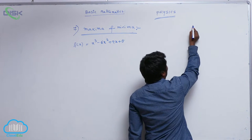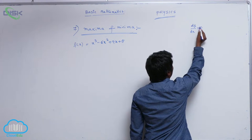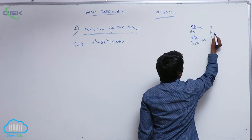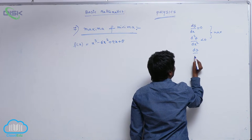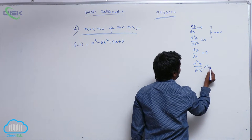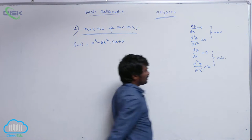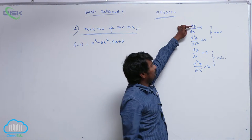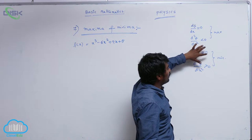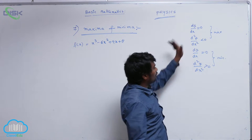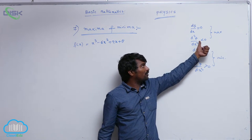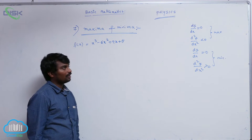That means, dy by dx is equal to 0 and d square y by dx square is less than 0 for maxima. And dy by dx is equal to 0, d square y by dx square is greater than 0 for minima. These are two conditions. Whether it attains minimum value or maximum value, the first derivative must equal to 0. Whether particularly it attains maxima or minima, we have to go for verification of the second derivative, as we have already seen.